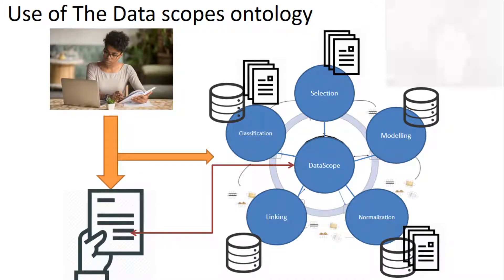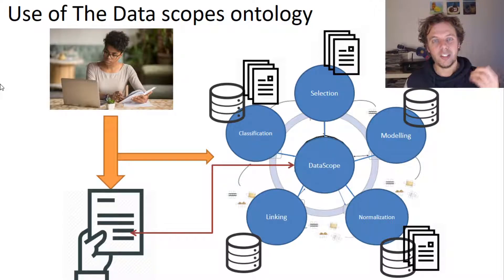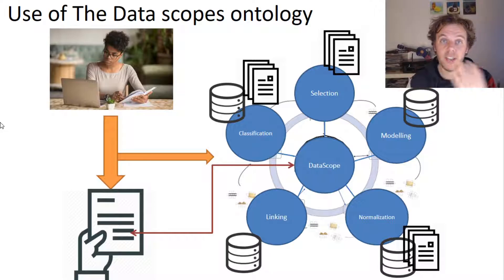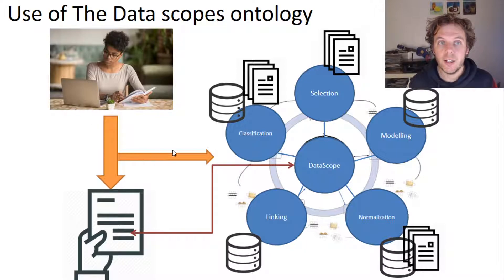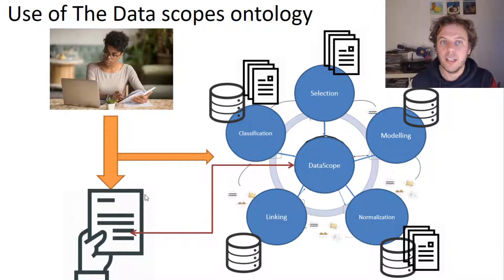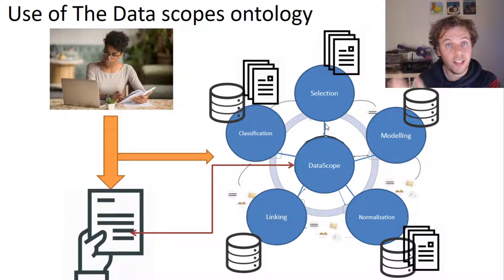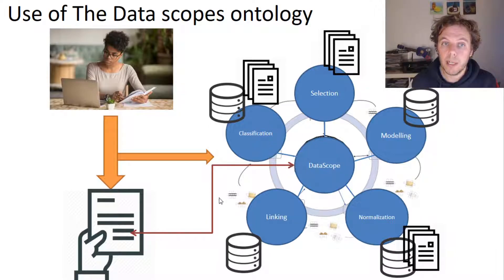How do we envision the use here? We think about this as a research output presented next to the research paper. A historian would do the research and then publish or identify the data scope — either within a paper, or as an explicit representation using our ontology. That data scope can then be linked to the paper.